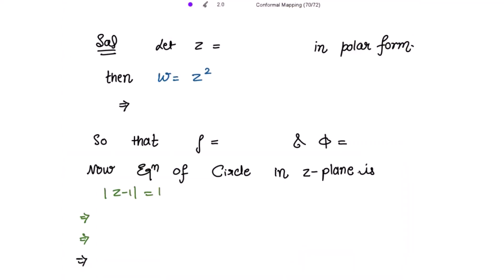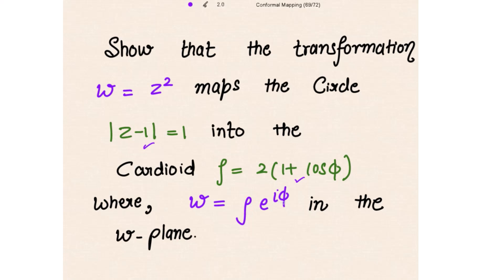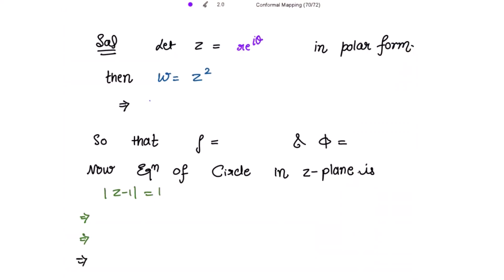Let's write z in polar form as z = re^(iθ), and w is given as ρe^(iφ). So we use ρe^(iφ) = z² = r²e^(2iθ). Comparing both sides, we get ρ = r² and φ = 2θ.